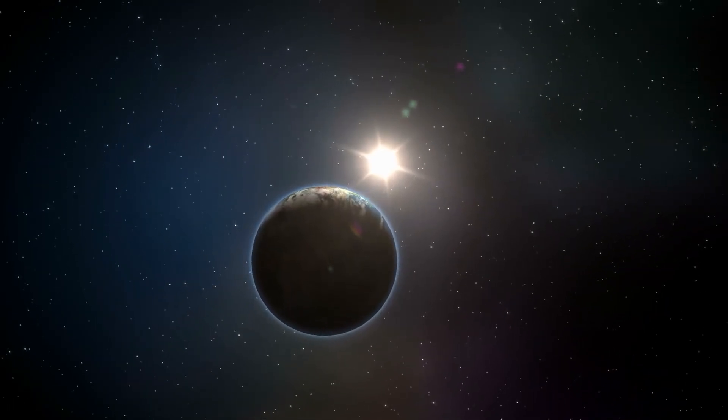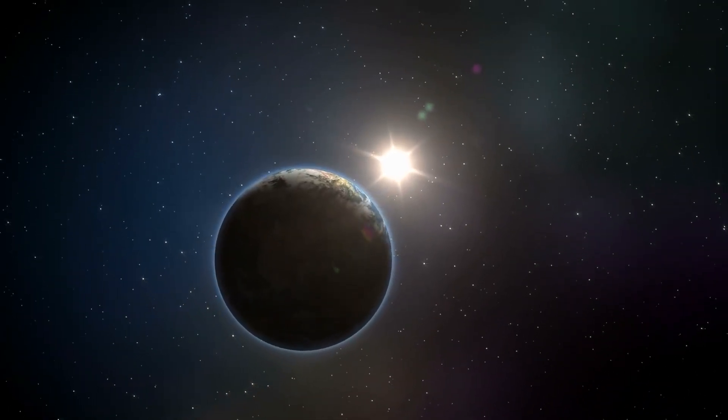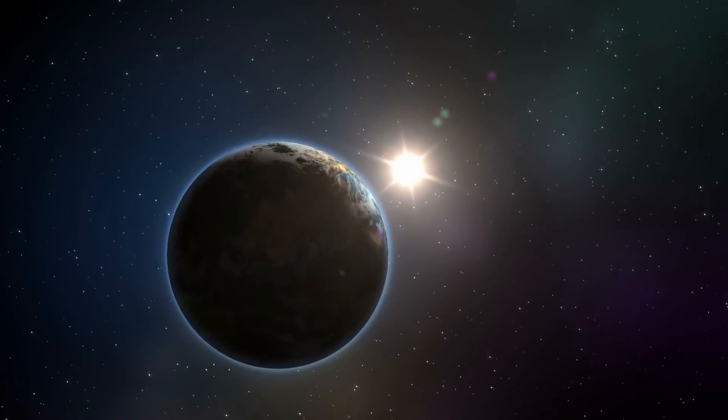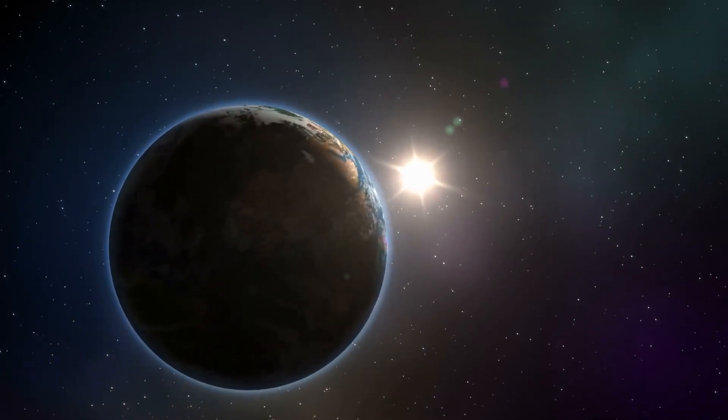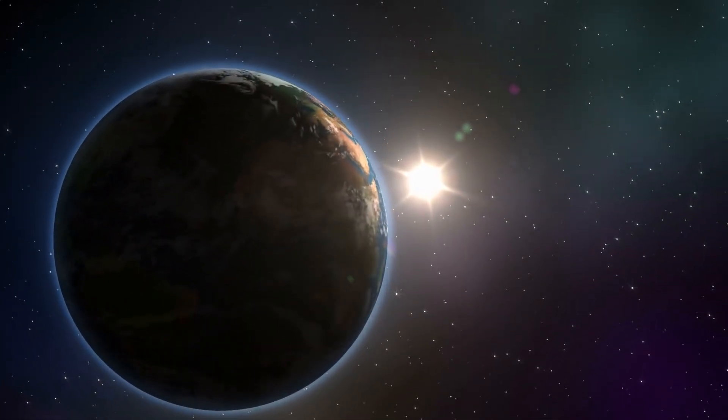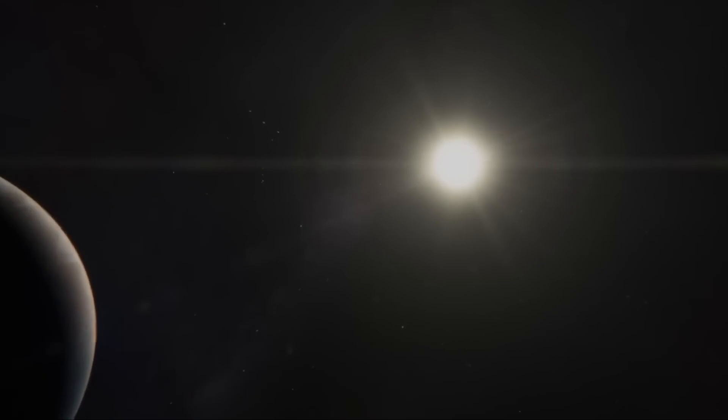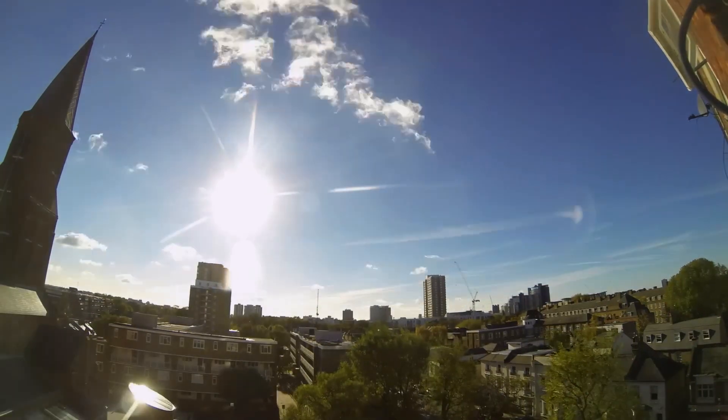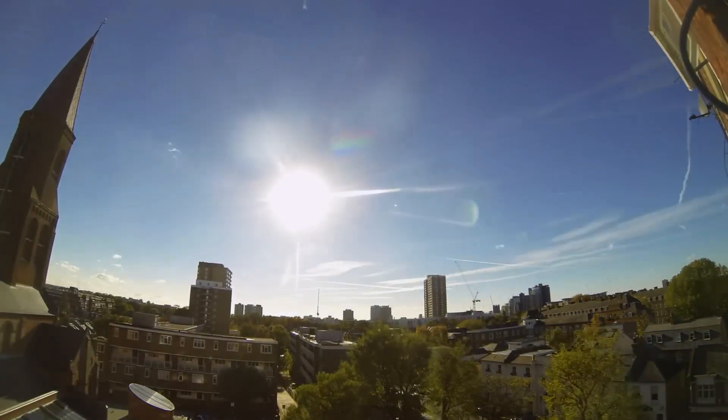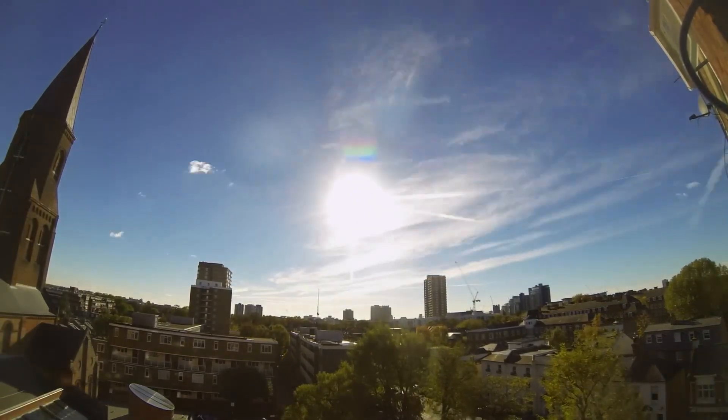For example, if the sun turned into a black hole, which, according to modern understanding, is impossible, the orbits of Earth and other planets in the solar system would remain unchanged. In general, turning the sun into a black hole would have no effect on the lives of Earth's inhabitants, except that we would stop receiving light and heat from the sun, and Earth would soon freeze.